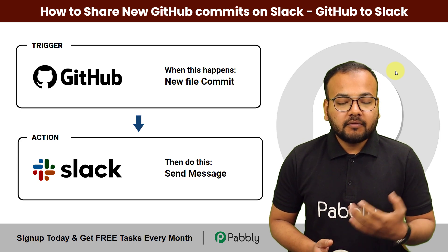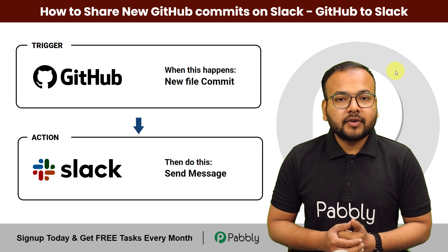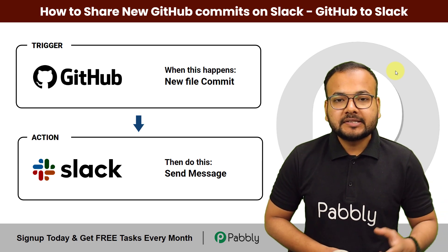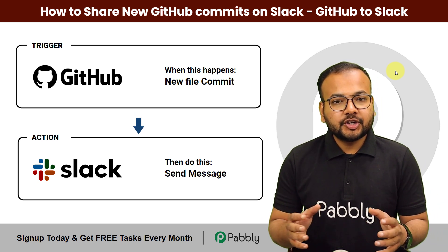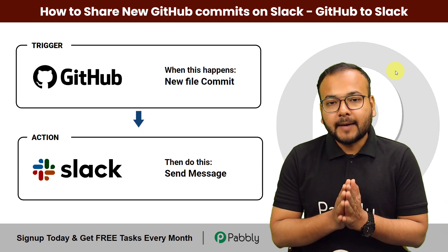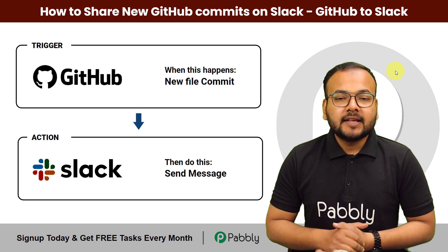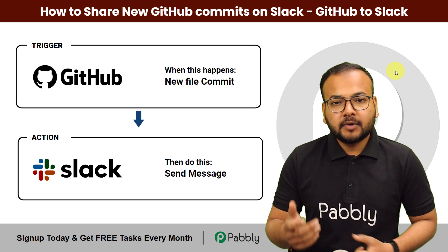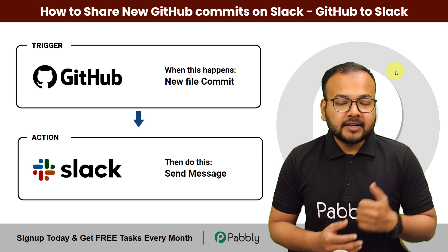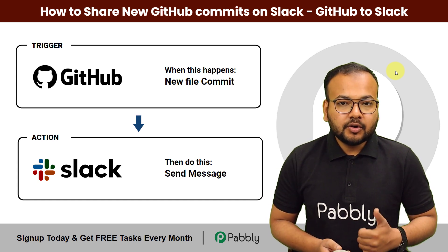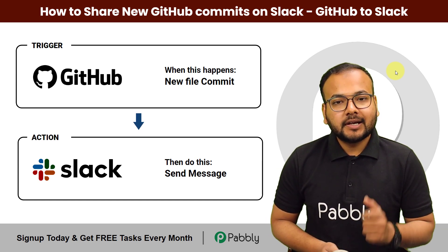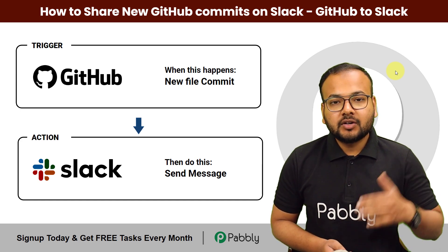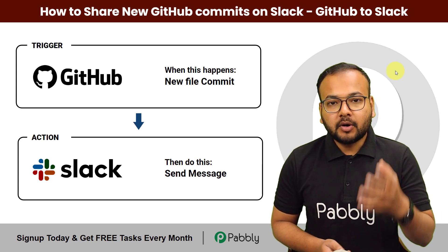If you're a developer or part of a software project, you know that GitHub is an essential tool for version control and collaboration. On the other hand, Slack is a popular messaging tool for team communications. Here I'm going to show you how you can integrate GitHub with Slack so that you can stay on top of your project's progress.